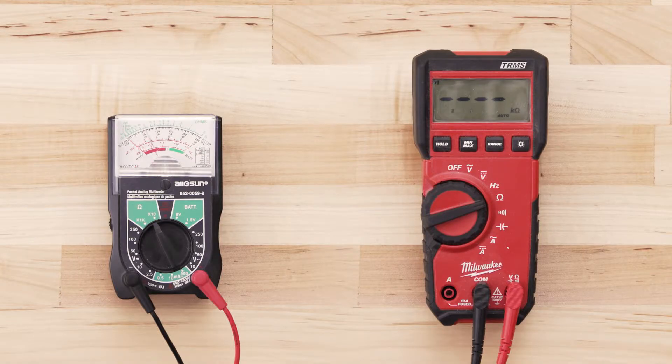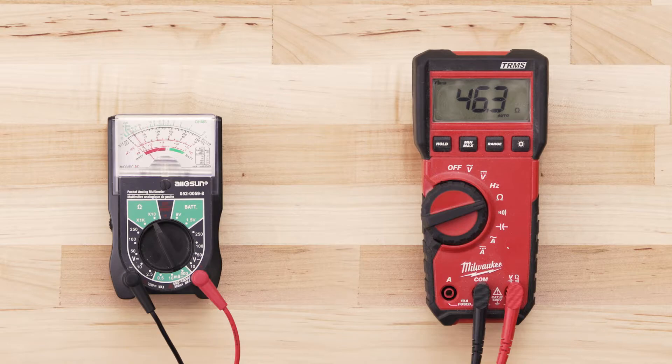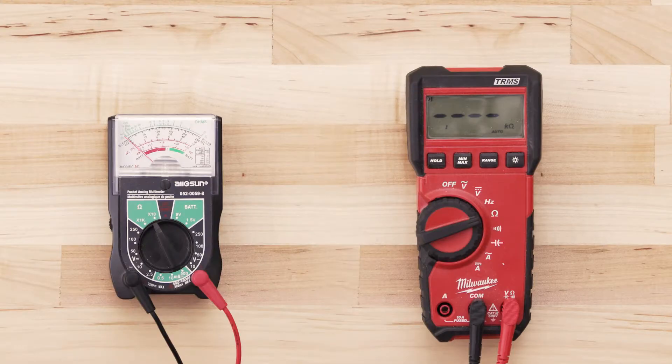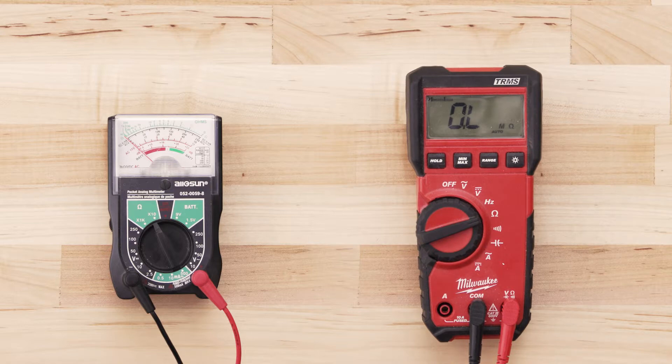If the element has continuity, your multimeter should read anywhere from zero to 50 ohms. If there is no reading on the multimeter or very little change, then there is no continuity and you will have to replace the element.